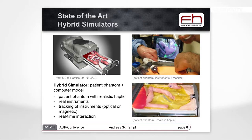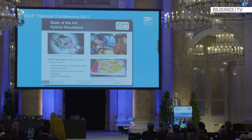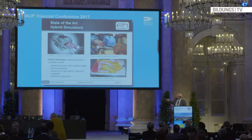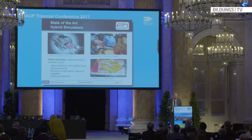A newer type are hybrid simulators, which are now the main topic. Hybrid simulators combine both modalities: a mannequin combined with a computer program and model. You can touch the mannequin — physical reality — but you can extend that physical reality with a computer program providing views not available in the physical reality. These typically consist of a relevant region of a mannequin, not a full-scale one, and you use real instruments for training.